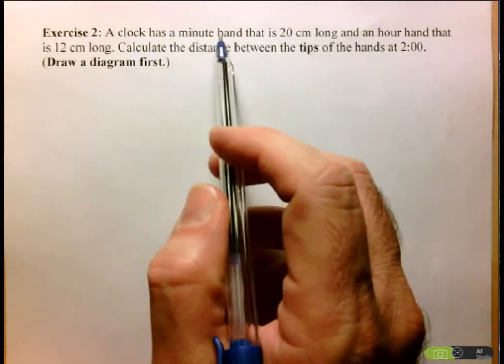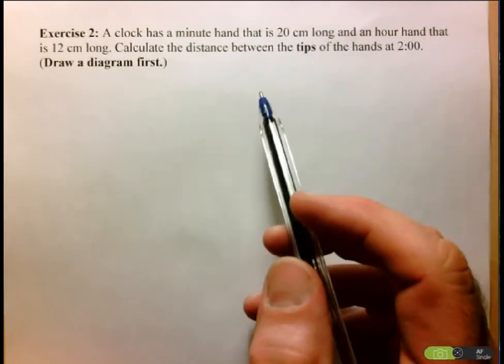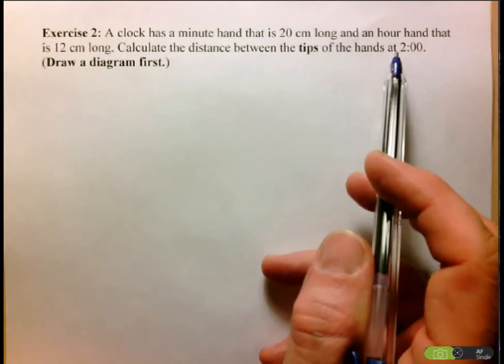It says that a clock has a minute hand that is 20 centimeters long and an hour hand that is 12 centimeters long. Calculate the distance between the tips of the hands at 2 o'clock.